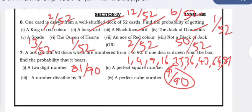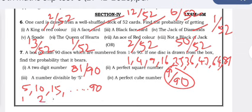A number divisible by 5 — the multiples of 5 from 1 to 90 are 5, 10, 15, 20, 25, ... up to 90. Since 90 = 18 × 5, there are 18 multiples of 5. So the probability of getting a number divisible by 5 is 18/90 = 1/5.